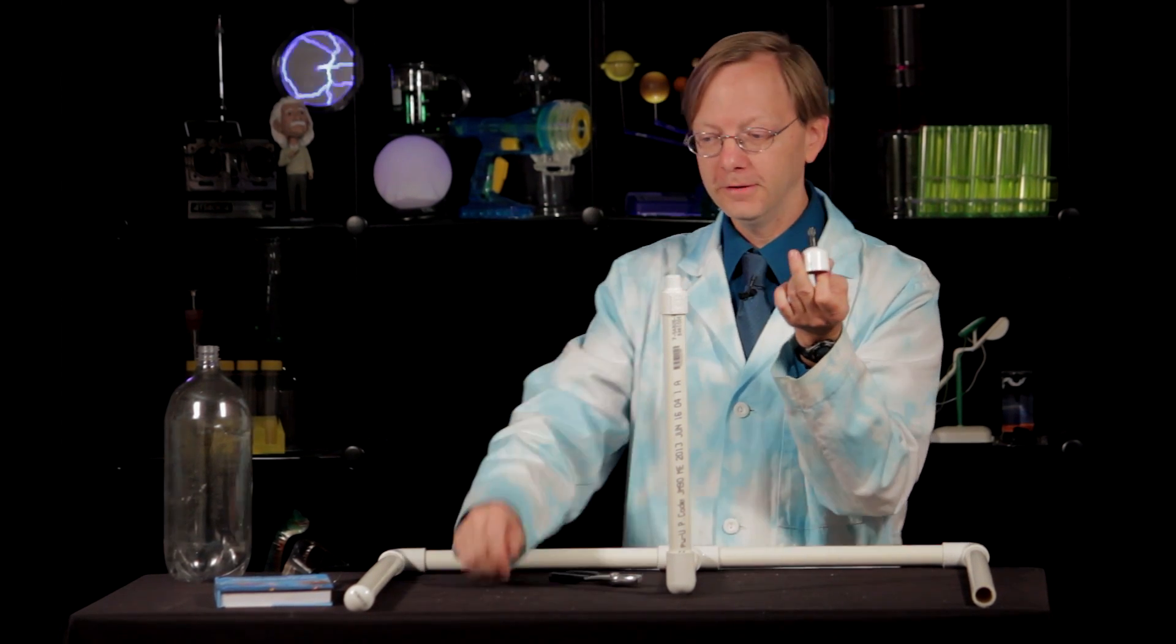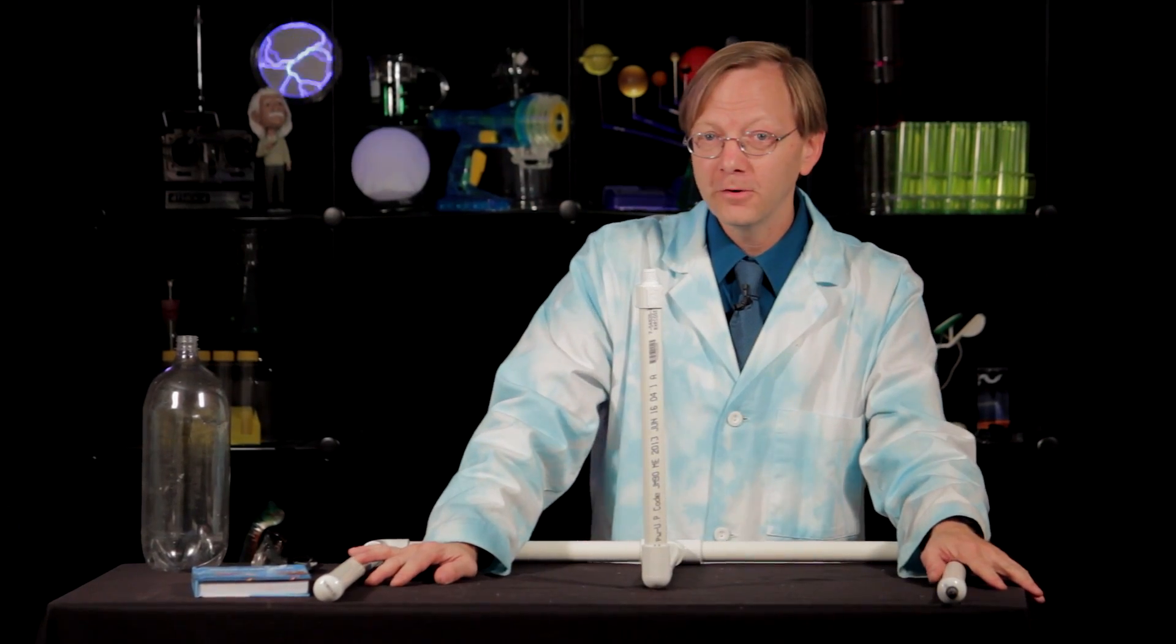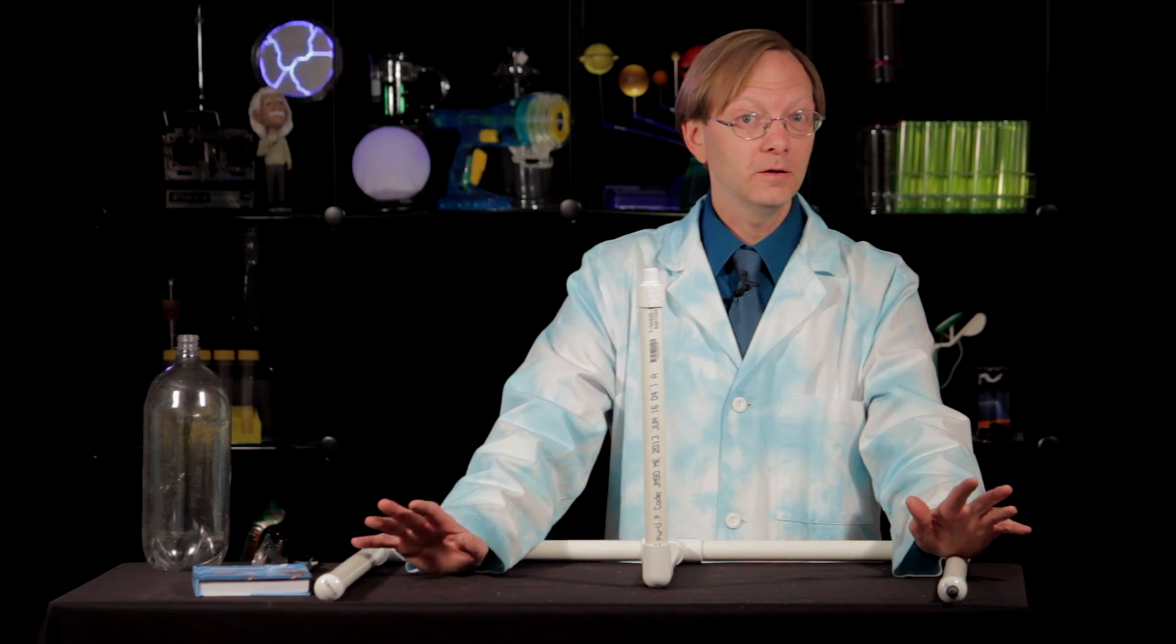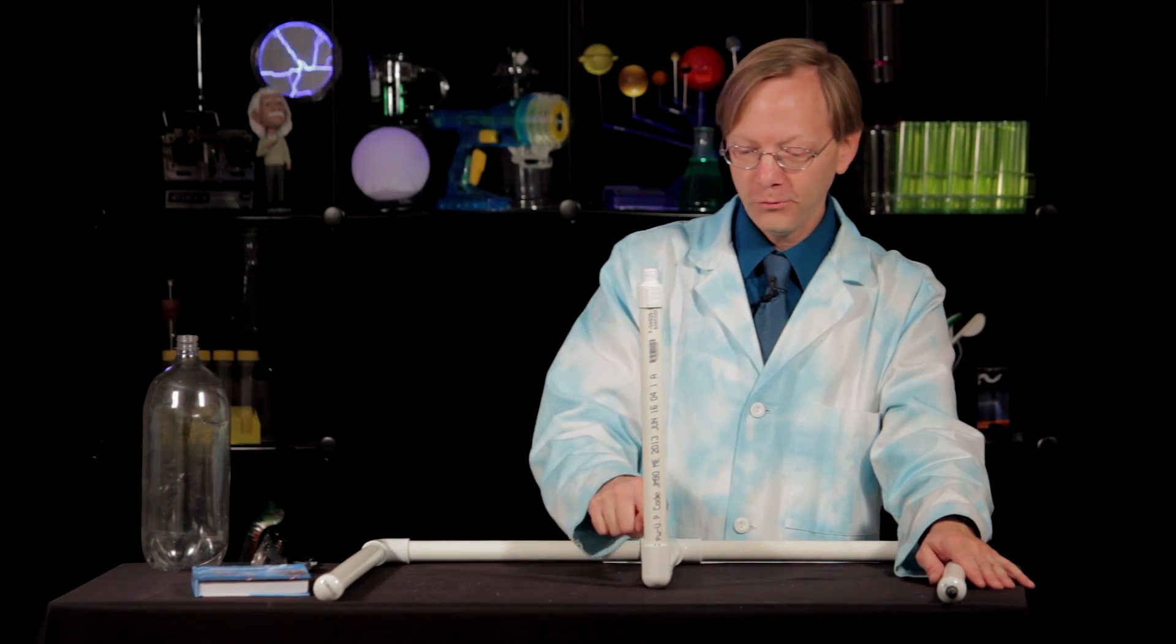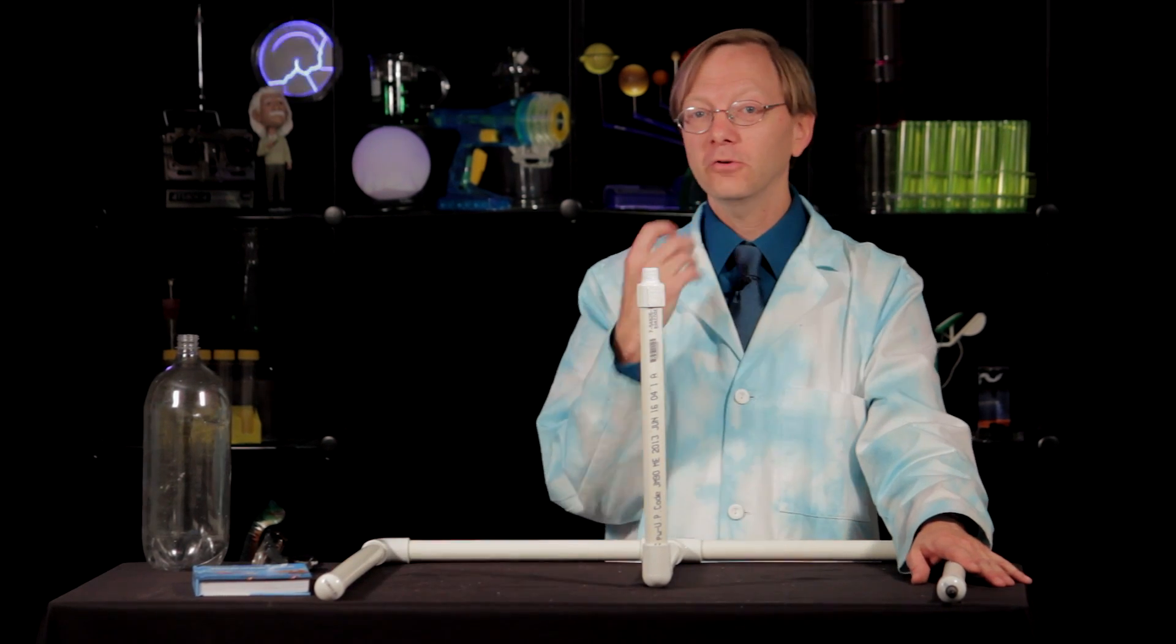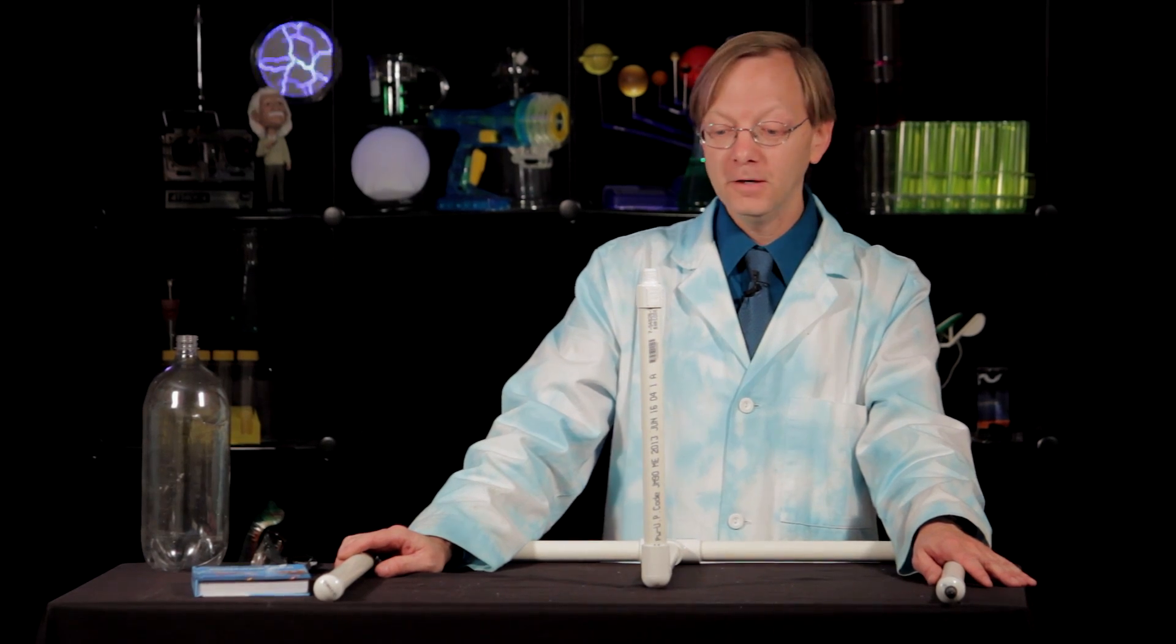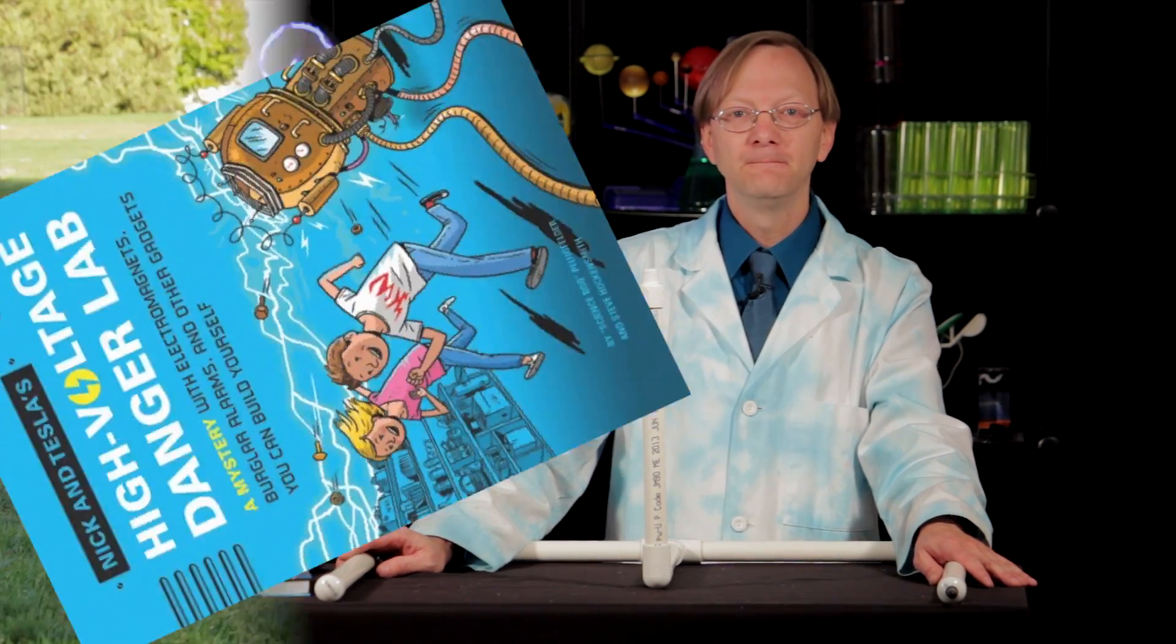And now it's time to permanently glue your rocket launcher together. Now grab your nearest friendly adult and some PVC cement that you get from the hardware store and go through every joint to secure that permanently. That will make sure that our air pressure stays in. Once you have that all done, then you're ready to go outside.